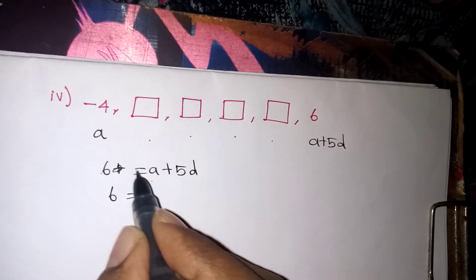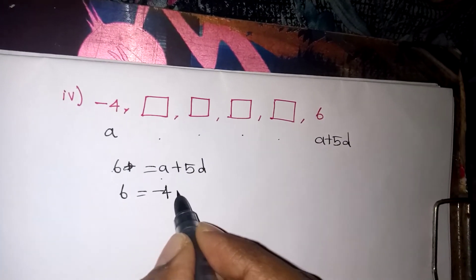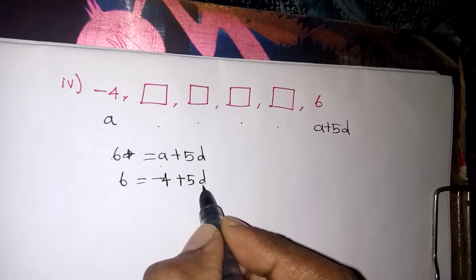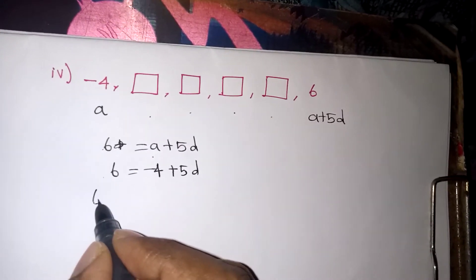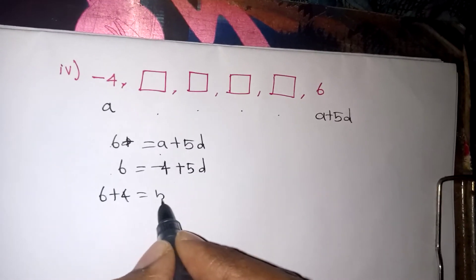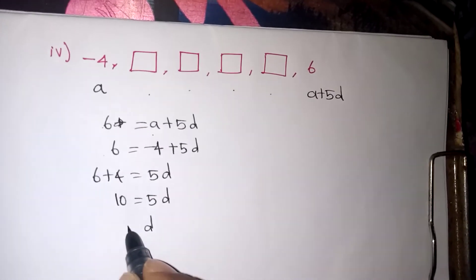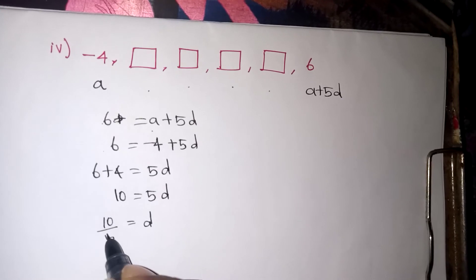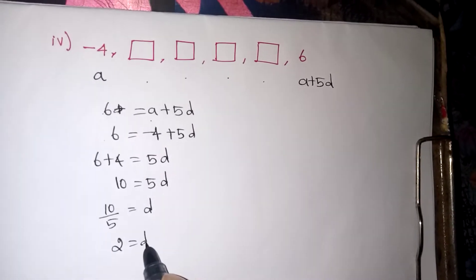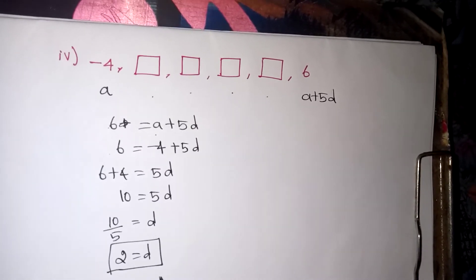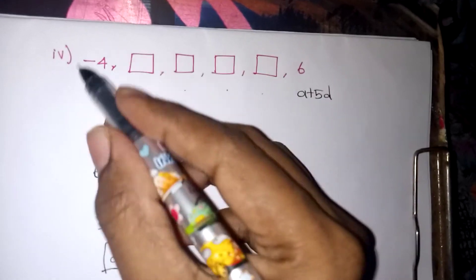So 6 is equal to A plus 5D is given. Now in the place of A you can substitute minus 4 which is plus 5D. That minus 4 will come to this side. That will become 6 plus 4 is equal to 5D. So 10 is equal to 5D. Multiplication 5 will come down as division. So 10 by 5 will give you 2. So 2 is equal to D.